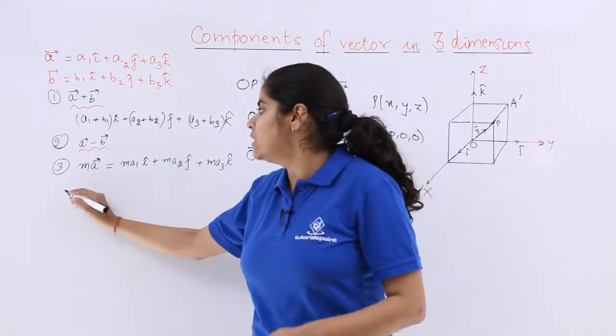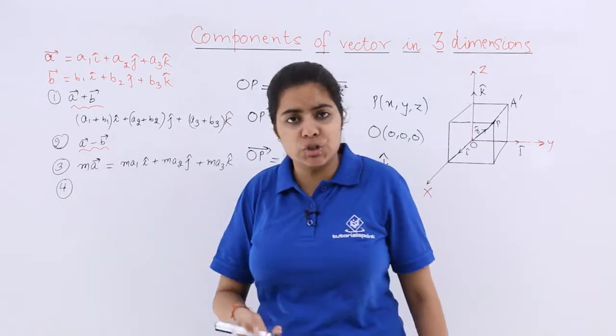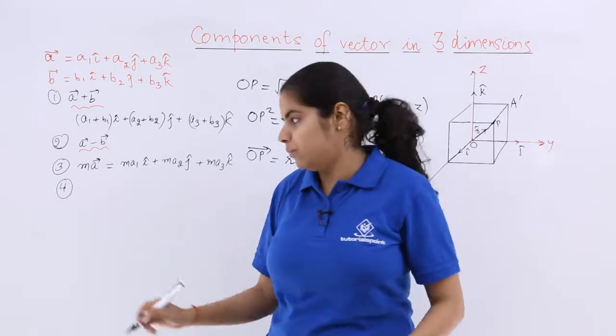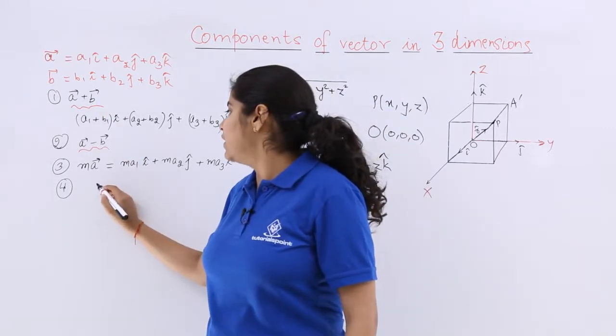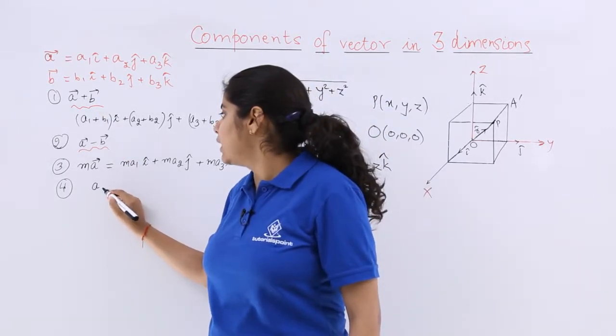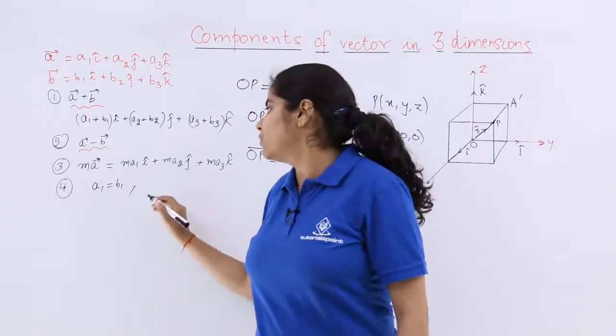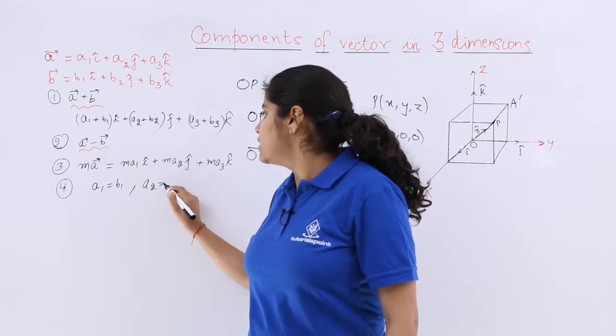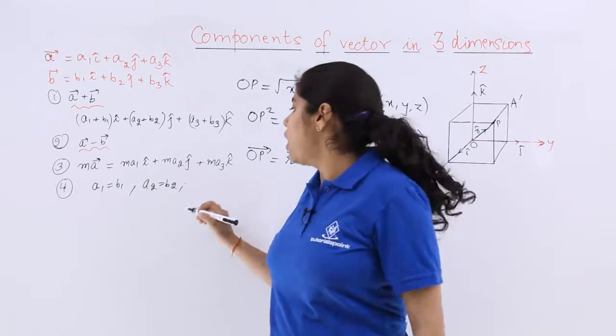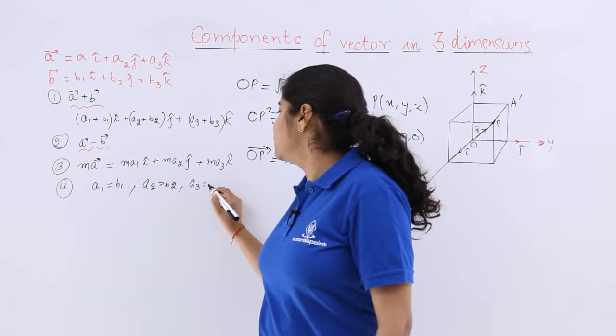Last but not the least, for which we can find questions in examinations also, is equality. If I say vector a is equal to vector b, that means a1 equals b1, also necessarily a2 equals b2, and also a3 equals b3.